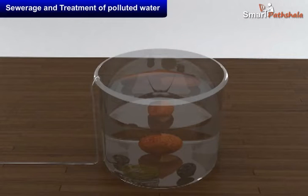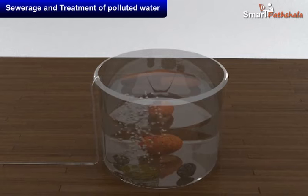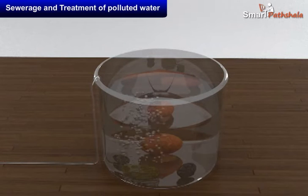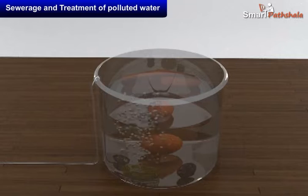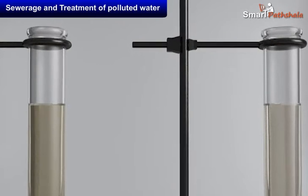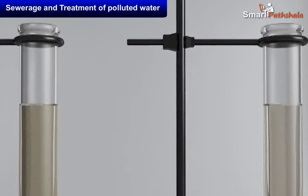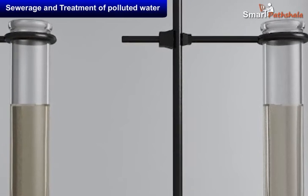Now take an aerator which we use in aquariums and place it in the jar to bubble air through the sample in the glass jar. Allow overnight aeration. The next day when aeration is complete, pour the sample into another test tube and label it as AFTER AERATION.